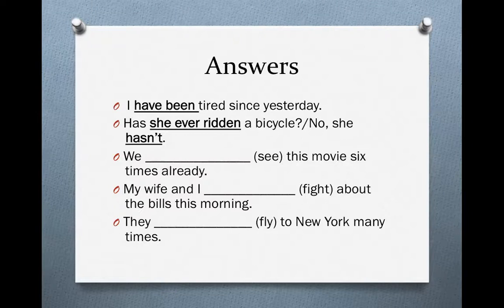For the next one: 'Has she ever ridden a bicycle? No, she hasn't.' We use the present perfect. Why? Because we don't know when in the past this happened — we're talking generally. And as you'll notice, we have the adverb 'ever.' When you see 'ever,' you're going to use the present perfect. And of course, the short answer is very easy: 'No, she hasn't.'